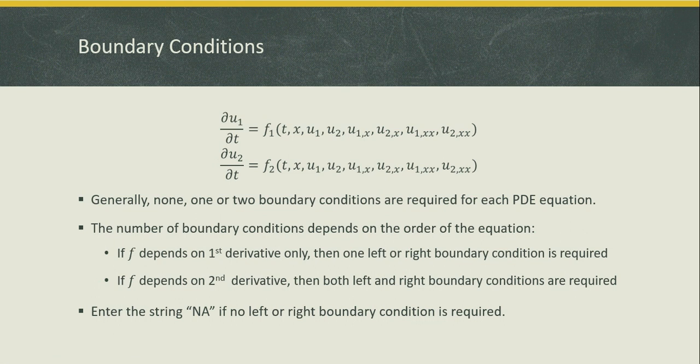Regarding boundary conditions: generally for each equation you need two boundary conditions — a left and right at the ends of your spatial domain. However, if your equation is first order, meaning it only depends on the first derivative, then only one boundary condition is required, and you pass the string 'NA' in either the left or right when it's not needed. If your equation depends on the second derivative, you must specify conditions on both the left and the right.